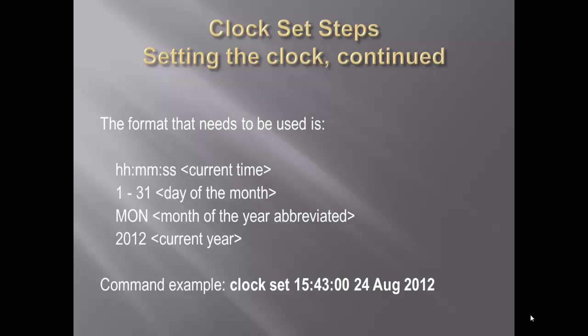The format that needs to be used is as follows: HH:MM:SS for the current time, the numbers 1 through 31 for the day of the month, the three-letter abbreviation for the month, and then the current year.